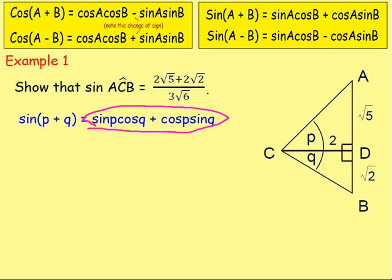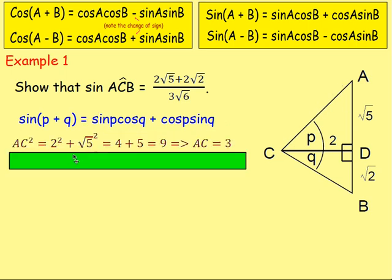From there, we want to sub in values for sin p, cos q, and so on. Sin p will take the triangle at the top — that is p. Sine p is going to be your opposite over hypotenuse. So that would be √5 over... we can use Pythagoras to work out the length of AC. So AC equals √(√5² + 2²), which gives √9 = 3.